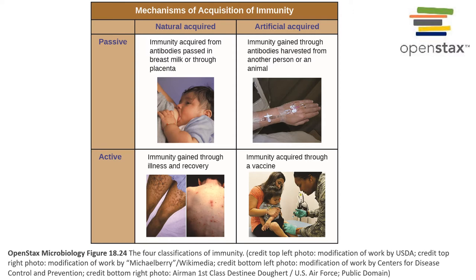Naturally acquired active immunity is what occurs when you're exposed to the pathogen and then you develop the illness that results from that pathogen. Over time you recover from the illness, but your adaptive immunity has formed a memory by exposure to the antigens that are associated with that pathogen.